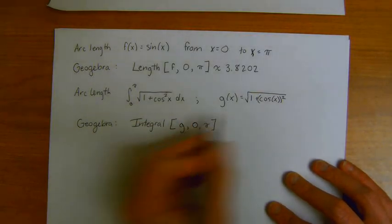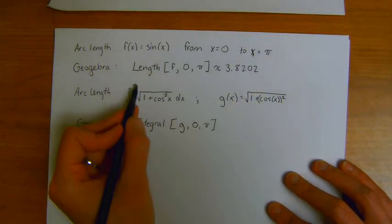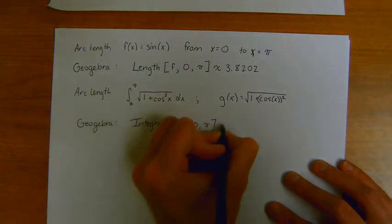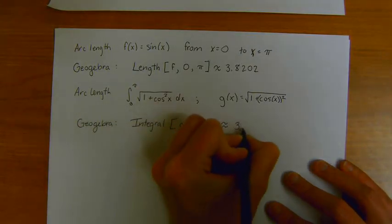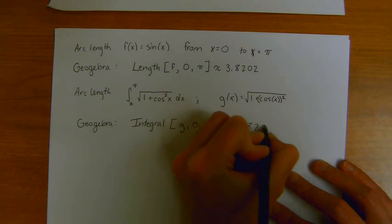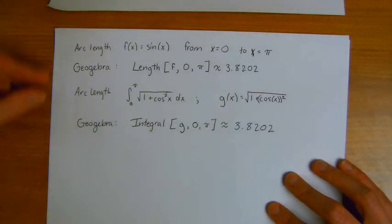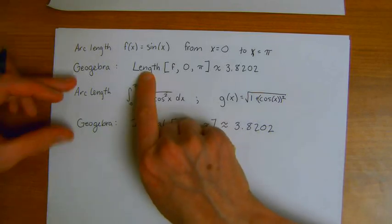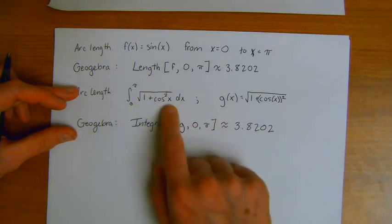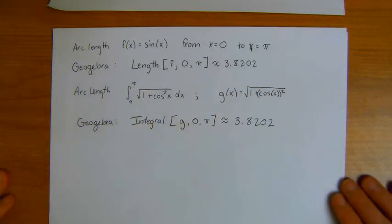And that's finding the area under this curve from 0 to pi, which is what computes the arc length. And thankfully, it gives the same result, 3.8202. So two ways that we can compute arc length in GeoGebra: directly using the length command, or indirectly by computing the area under this integral curve.